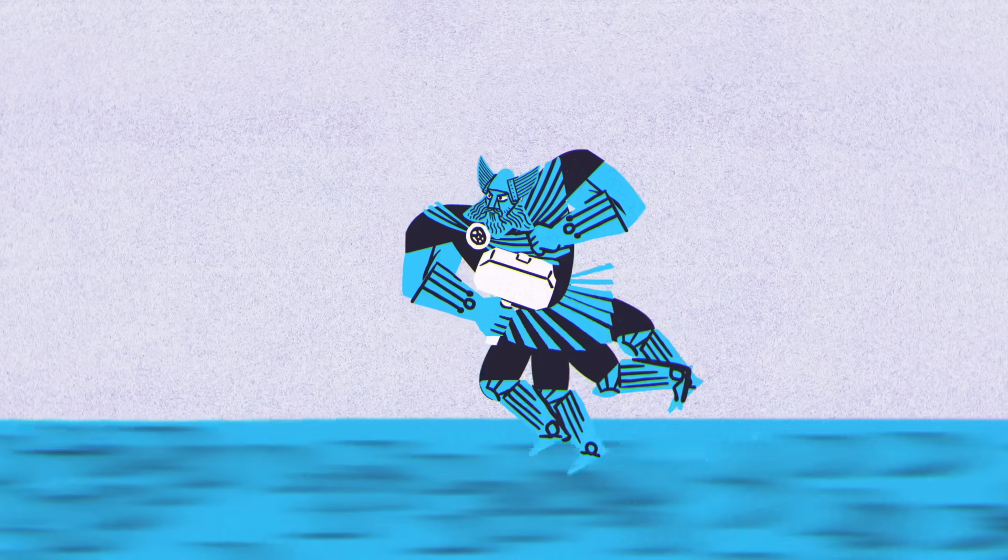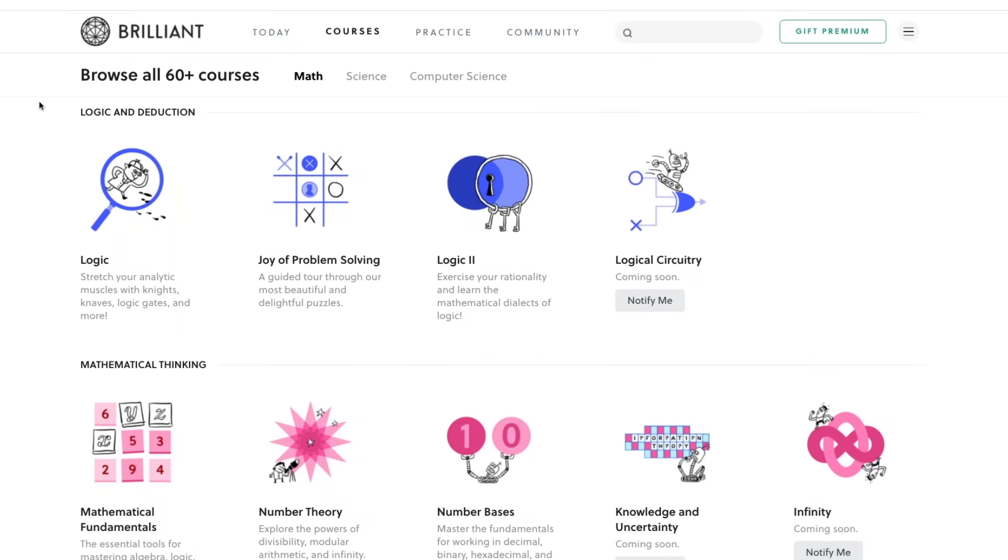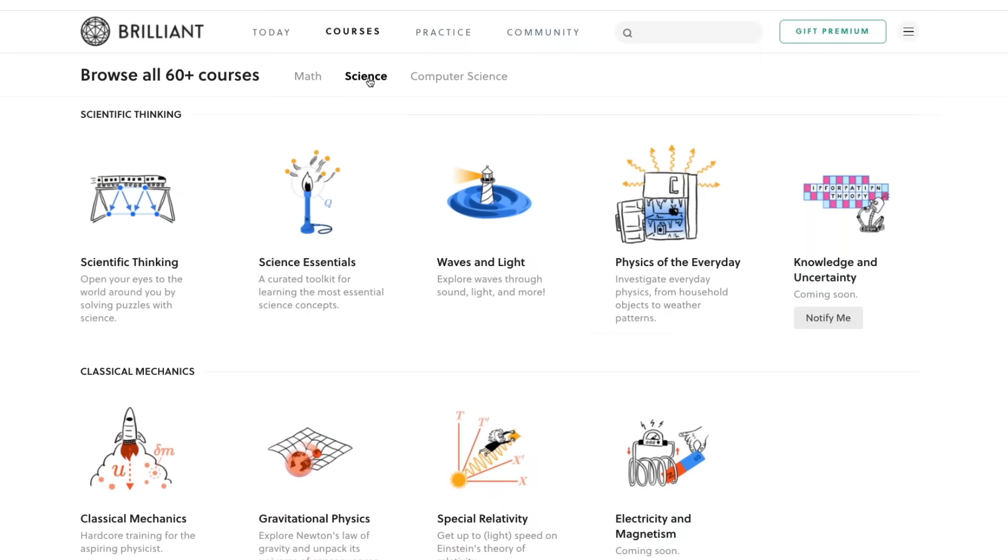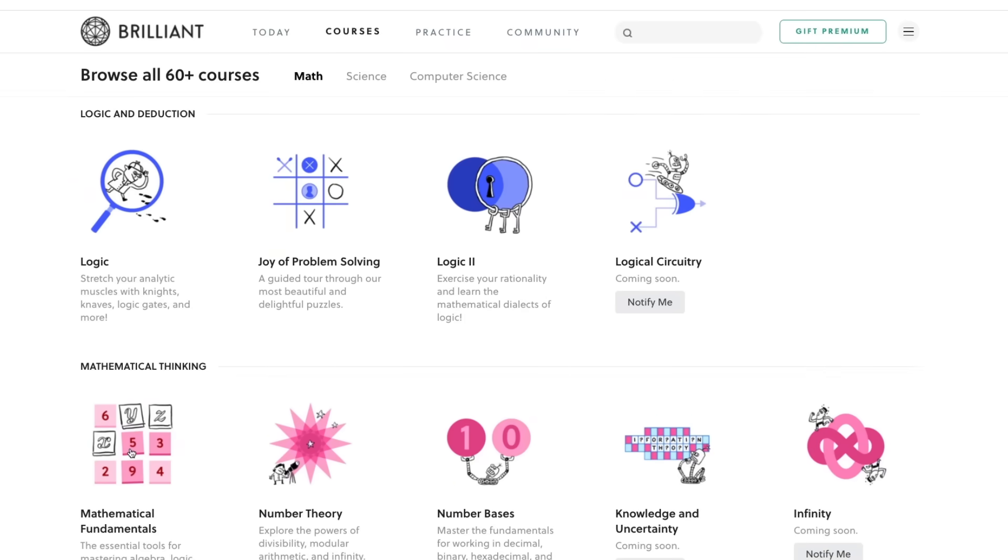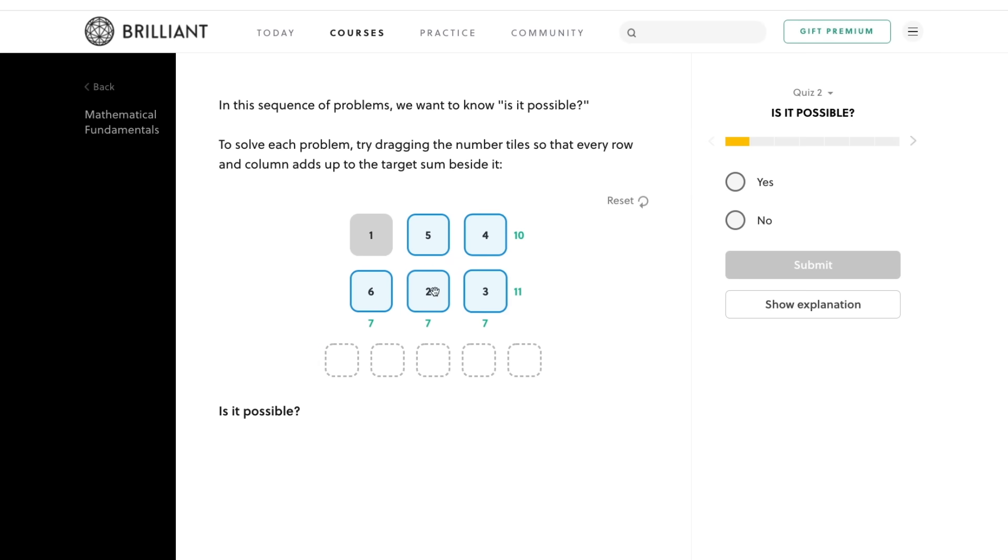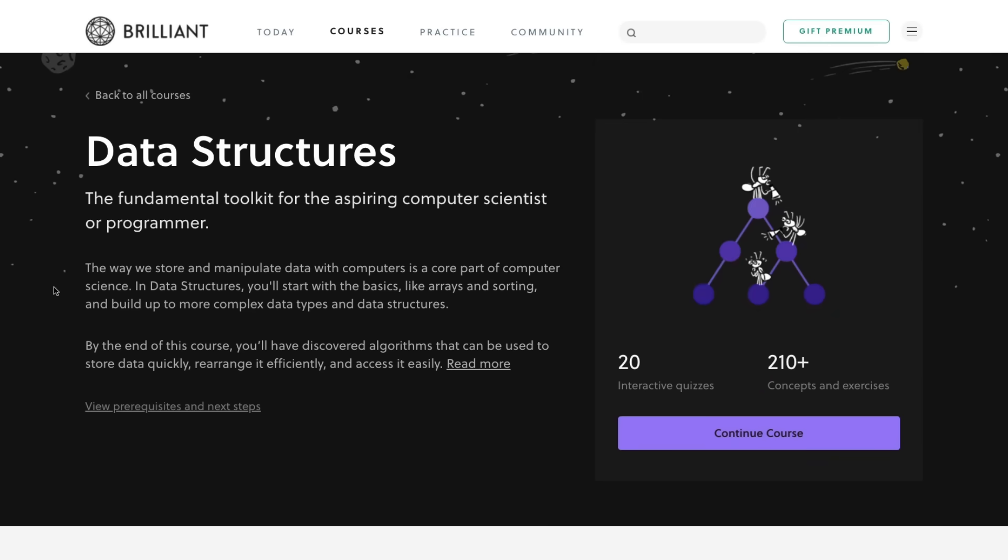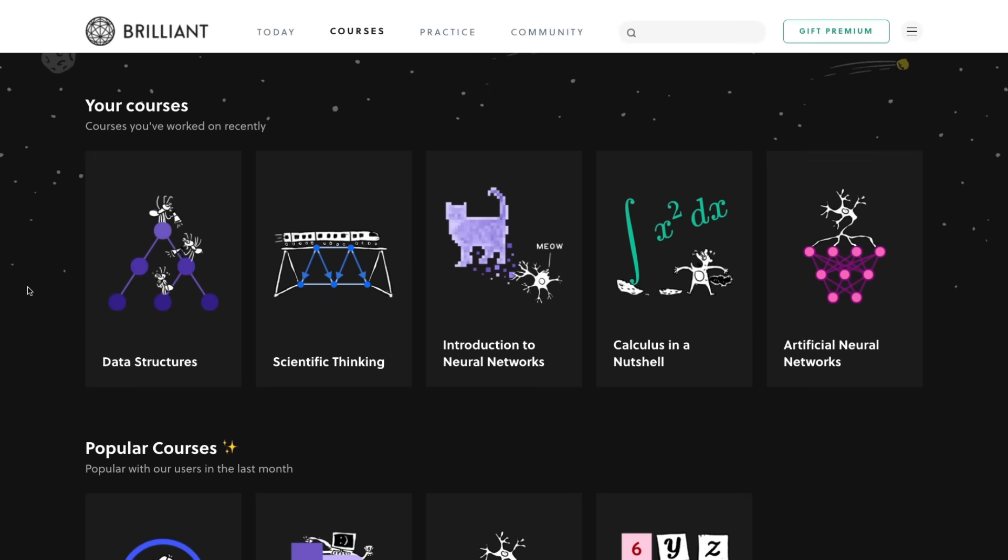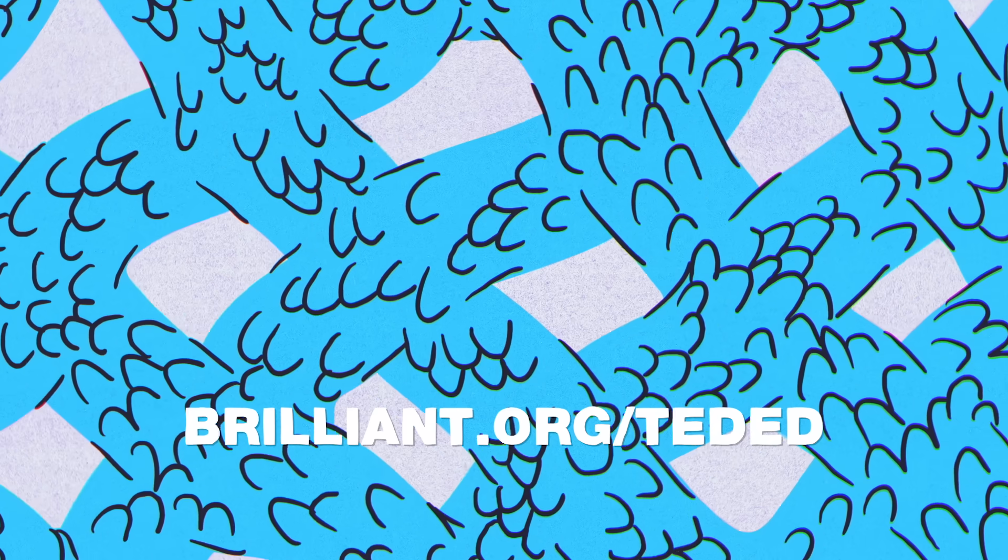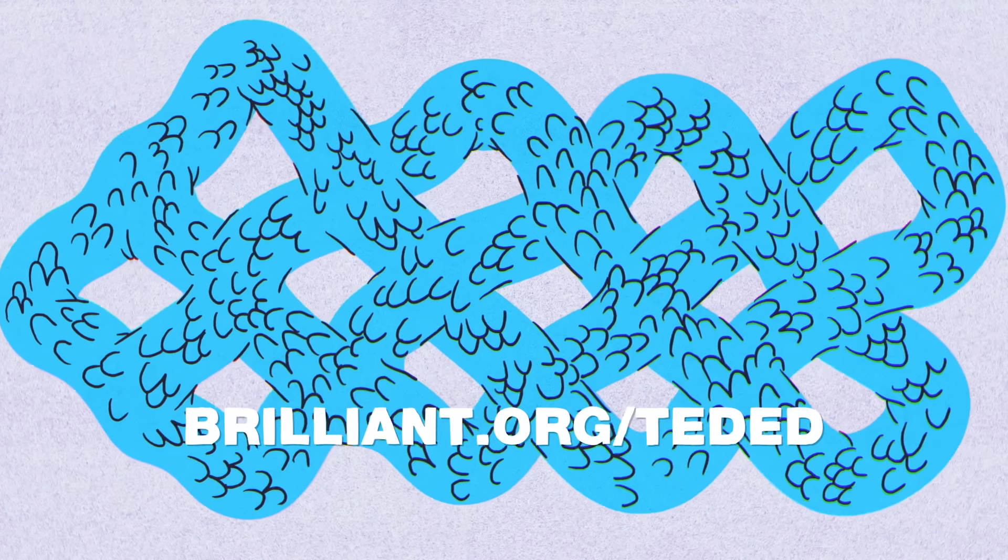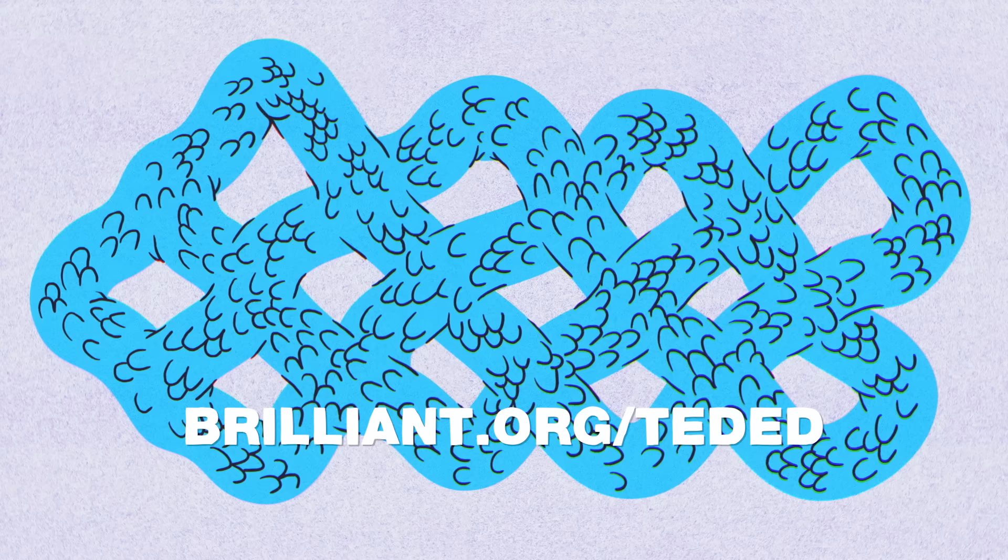Fortunately, you can prepare for that fateful day by using Brilliant. Brilliant is a problem-solving-based platform that has over 60 courses in math, science, and computer science. Its course library will let you brush up on mathematical fundamentals or forge ahead into subjects you've never studied before. Visit Brilliant.org slash TedEd to check it out, and the first 833 of you to visit using that link will receive 20% off the annual premium subscription fee.